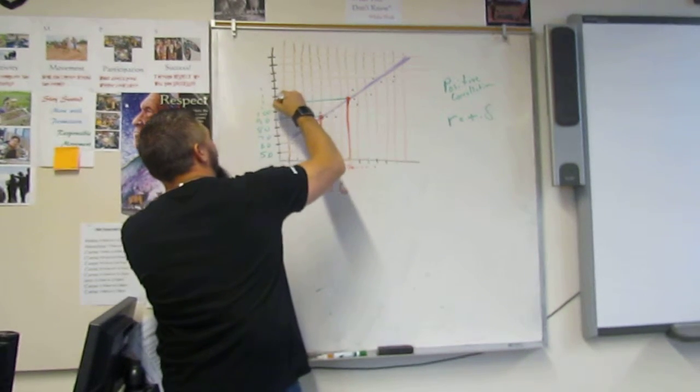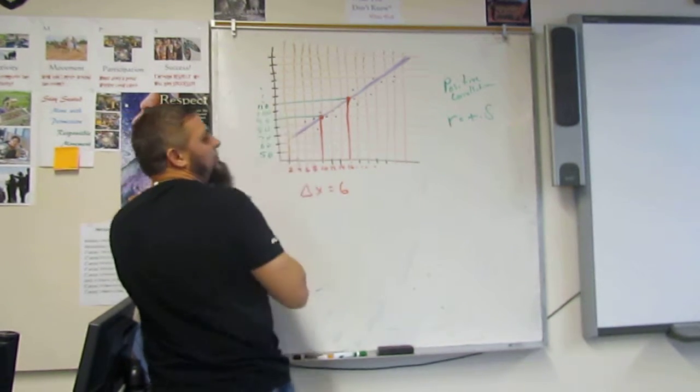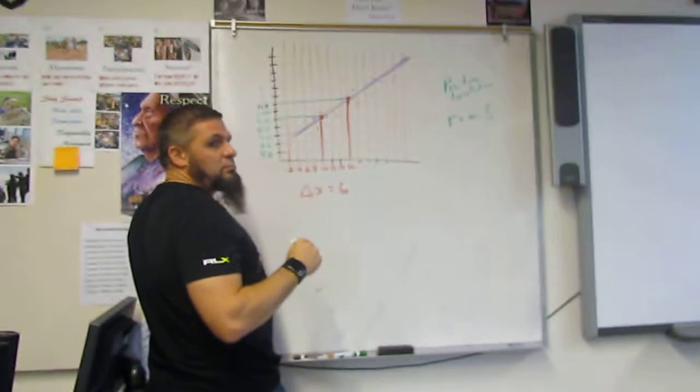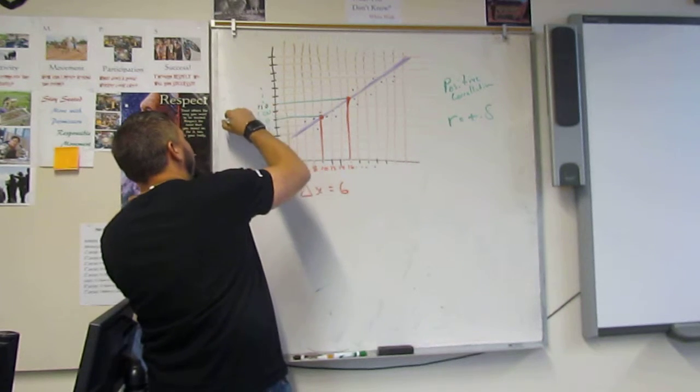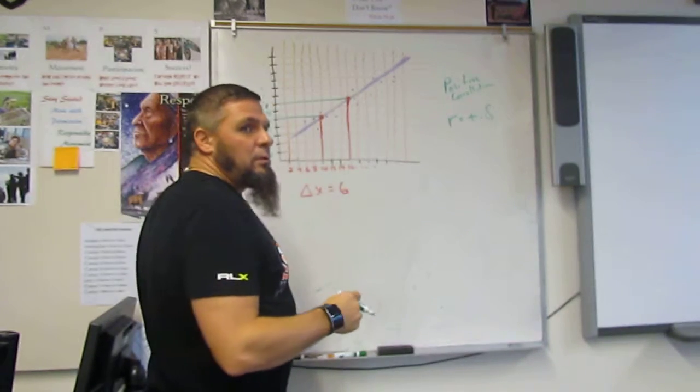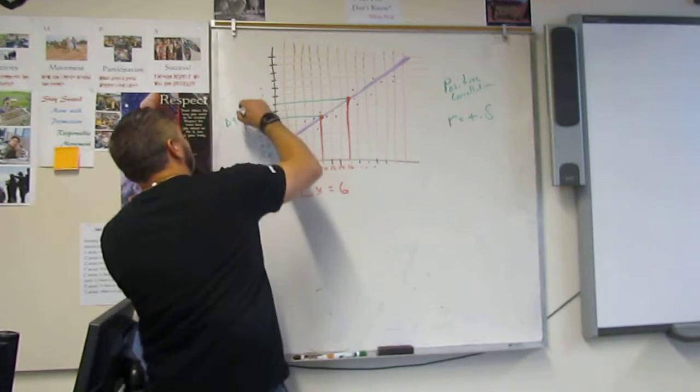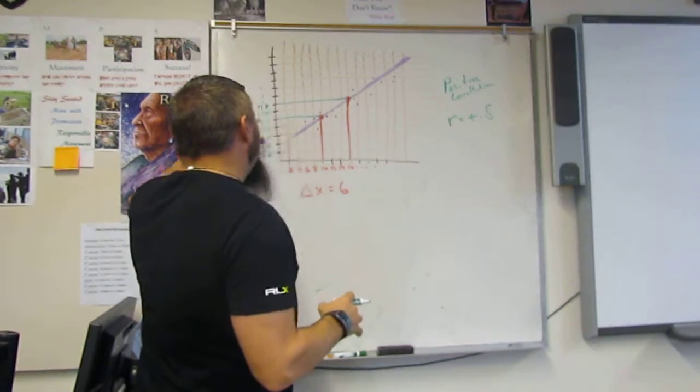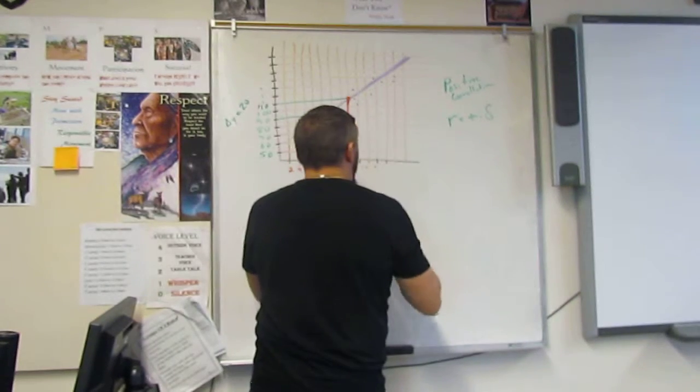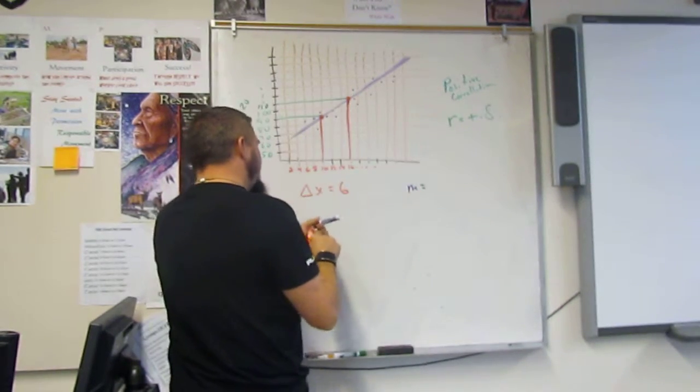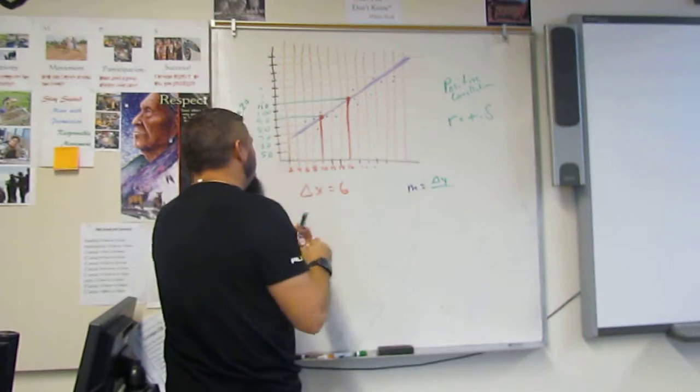And then I want to look at the difference in the Ys. So what is the difference between 90 and 110? What's the difference in Y? 20. Good. So with that, we can come up with our slope.